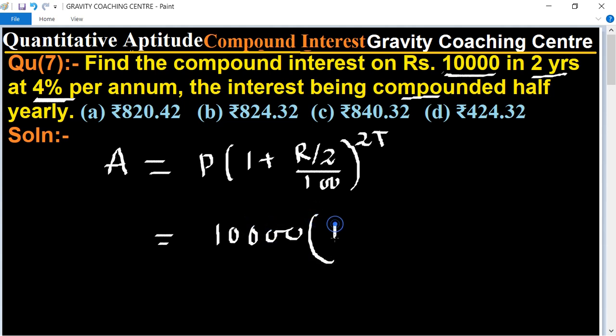and rate of interest is 4%, so 4 upon 2 upon 100, and time equals 2 years.